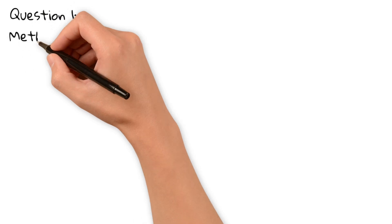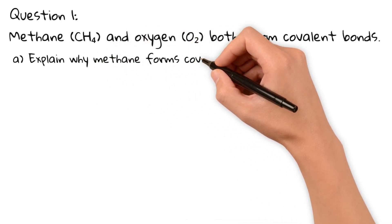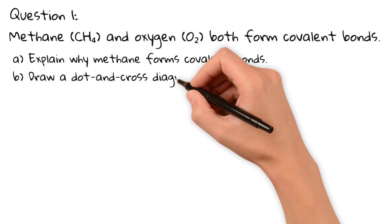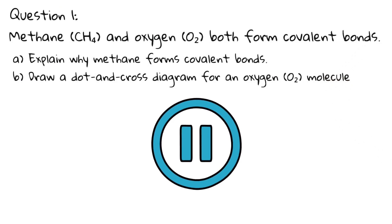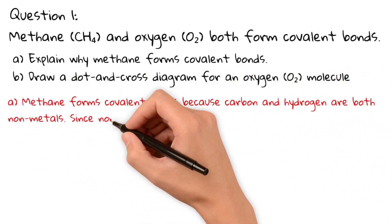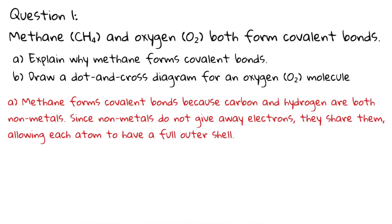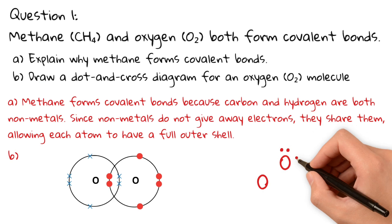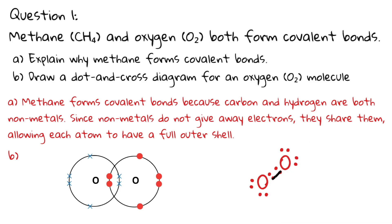Now let's test your understanding with two IGCSE-style questions. Question 1: Methane and oxygen both form covalent bonds. A: Explain why methane forms covalent bonds. B: Draw a dot and cross diagram for an oxygen molecule. Here's the answer: methane forms covalent bonds because carbon and hydrogen are both nonmetals. Since nonmetals do not give away electrons, they share them, allowing each atom to have a full outer shell. Oxygen (O₂) forms a double covalent bond because each oxygen atom has six outer electrons and needs two more to complete its shell.